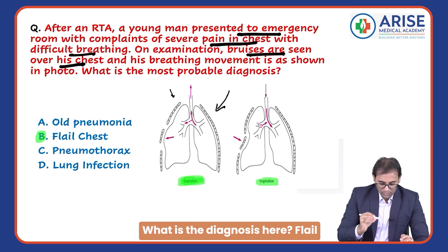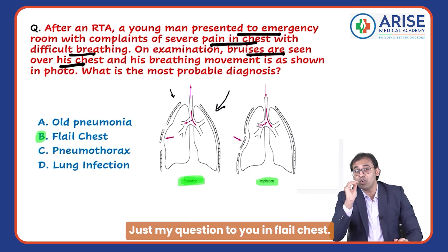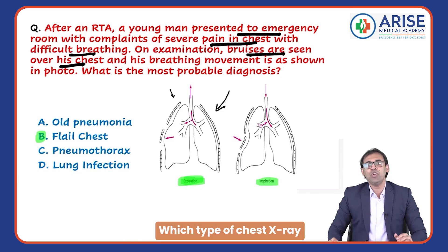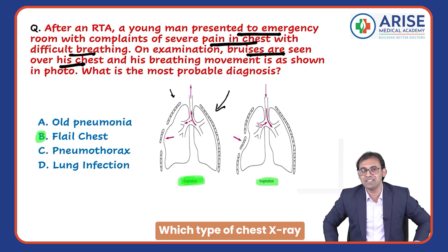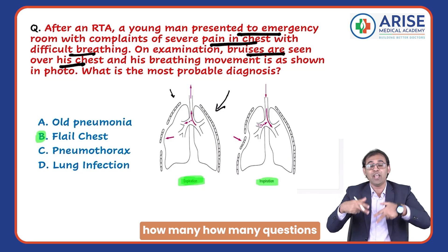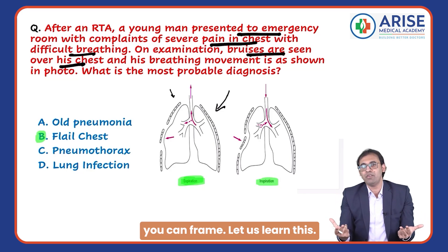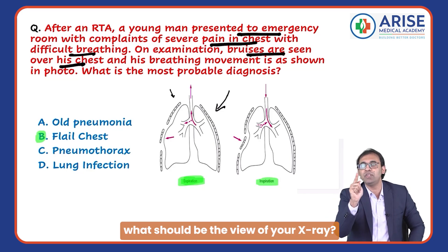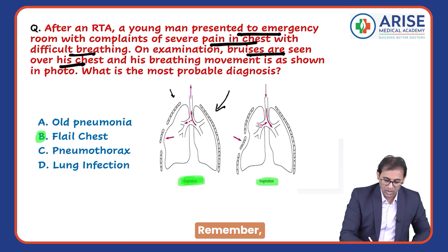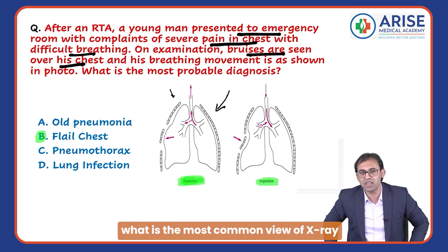In which condition do you see paradoxical respiration? Flail chest. So the diagnosis here is flail chest. My question to you: in flail chest, which type of chest X-ray are you going to take? From this question, how many questions can you frame? Let's learn this.